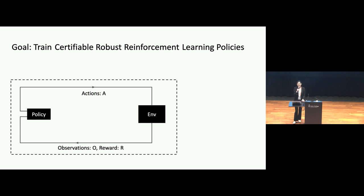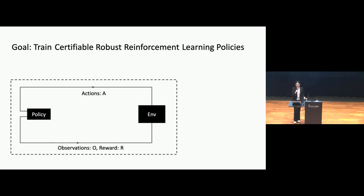Before presenting our algorithm, I will give a brief recap of how reinforcement learning works. In the reinforcement learning setting, we have a policy and an environment that interact with each other repeatedly. The policy passes an action to the environment, and then the environment passes back the observations and the reward to the policy. In our setting, we allow attacks to perturb the observations by adding small noises onto them.